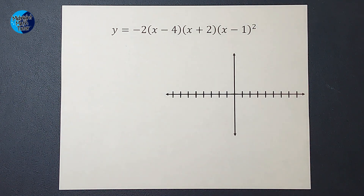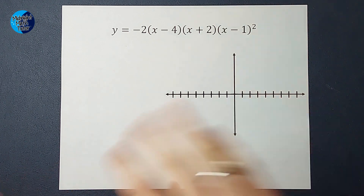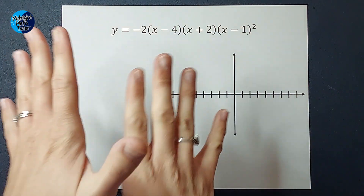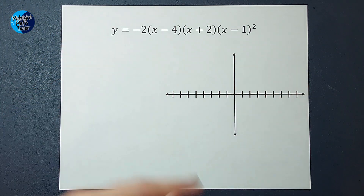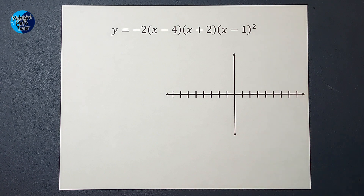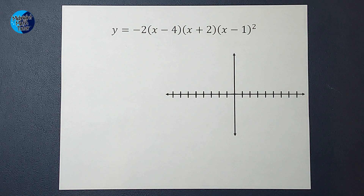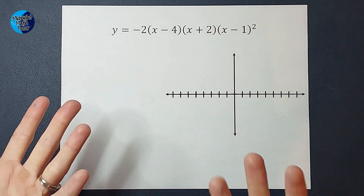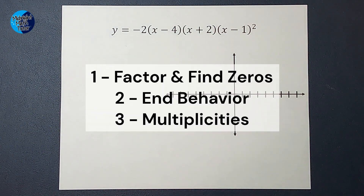Hey guys, we are going to graph a polynomial equation. Whenever we're being asked to graph something, we always have the option of picking a number for x, plugging it in, getting a y, and graphing that ordered pair. But that can be very time consuming, or we might not know what points to plug in that give us a good idea of what the graph looks like. So there is a better way — we're going to follow a couple of steps.